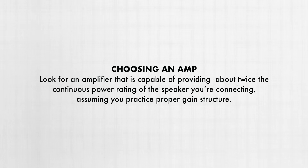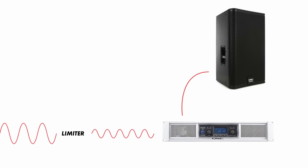The truth is, there really isn't a simple rule for matching amplifiers to speakers. No matter which amplifier and speaker combination you're using, there is always the possibility that incorrect gain structure will cause damage. My recommendation is to choose an amplifier that's capable of providing about twice the continuous power rating of the speaker you're connecting, assuming you practice proper gain structure. Remember, a doubling of power is only a 3 dB change. So choosing an amplifier capable of providing double the continuous power handling capacity of the speaker will allow the amplifier to provide adequate power while maintaining some extra headroom to avoid the tendency to overdrive the input of the amplifier. As a best practice, you can place a limiter before the input of the amplifier to prevent sending too much power to the speaker.